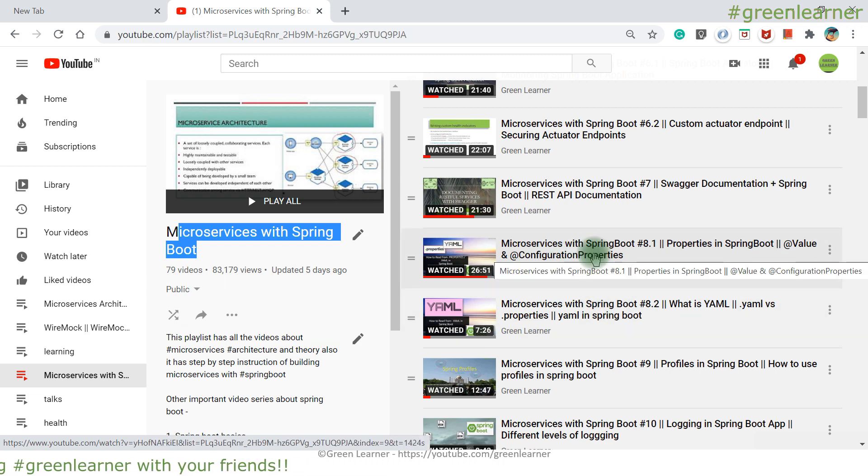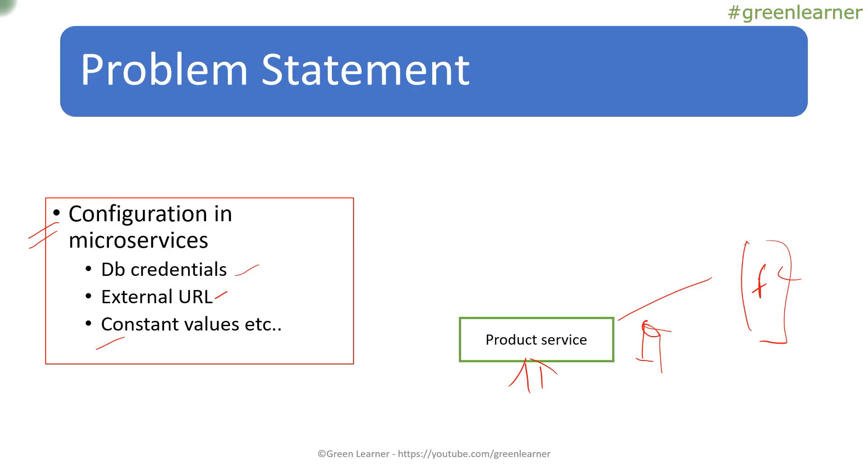I was talking about these configurations. What is the need to change this? What are the actual scenarios? So first, when we are developing a product service, it is in the dev environment. In the dev environment, I'll be having a different database, different dataset to test the services locally. I'll be needing some database URL, database username and password, which will be specific to dev environment.